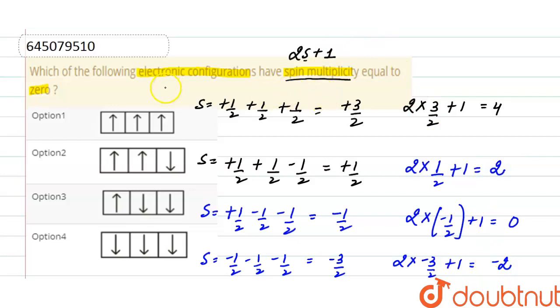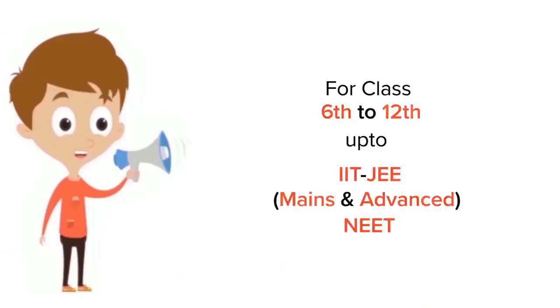So here in the question, we have to find out in which option the spin multiplicity is 0. And in option third, the spin multiplicity is 0, so correct option here is option third.